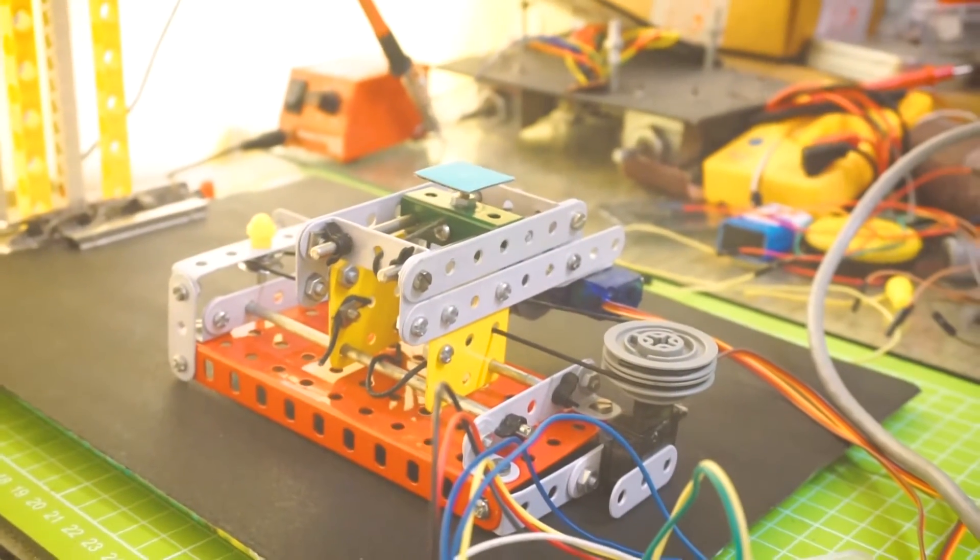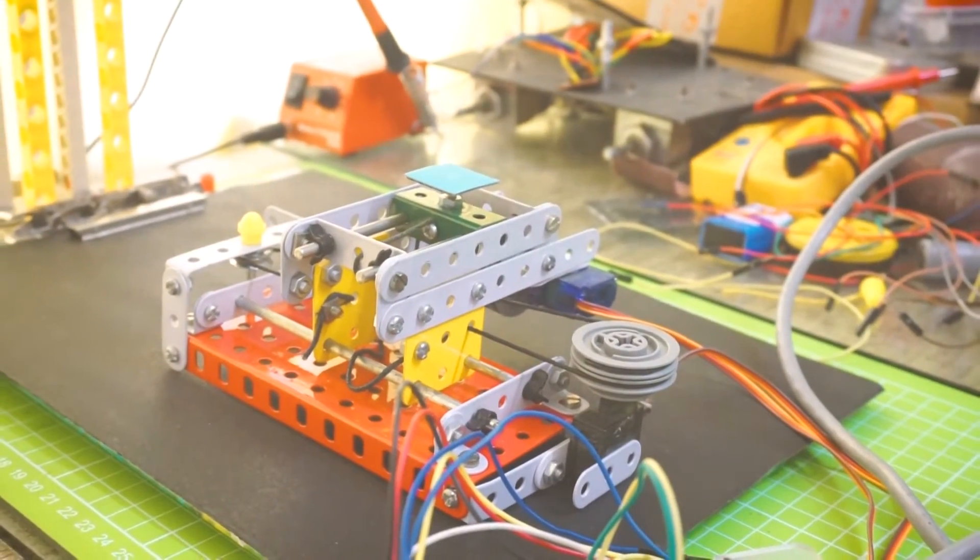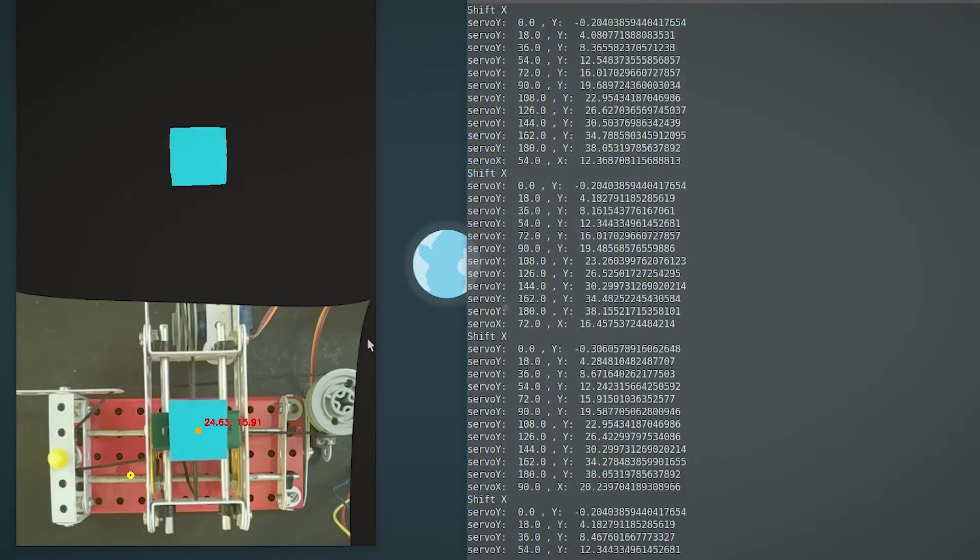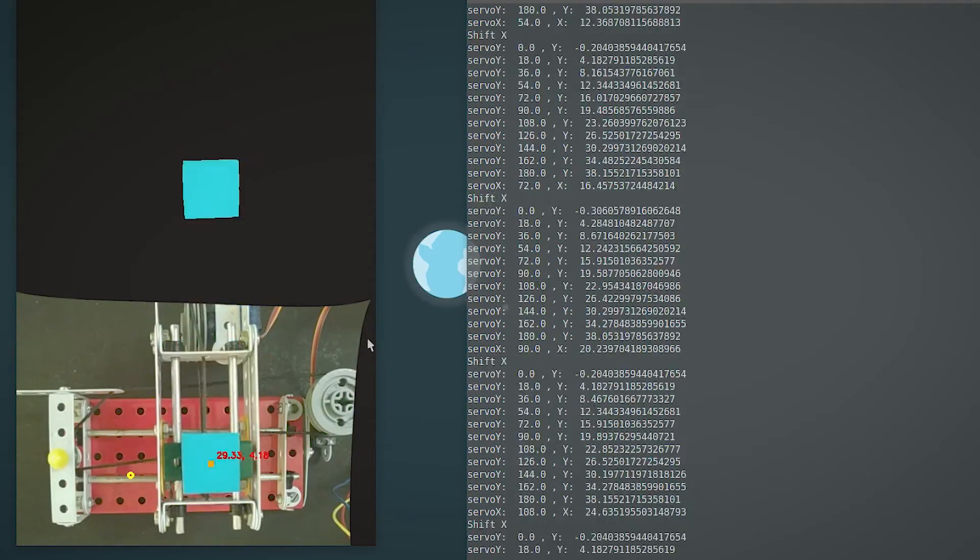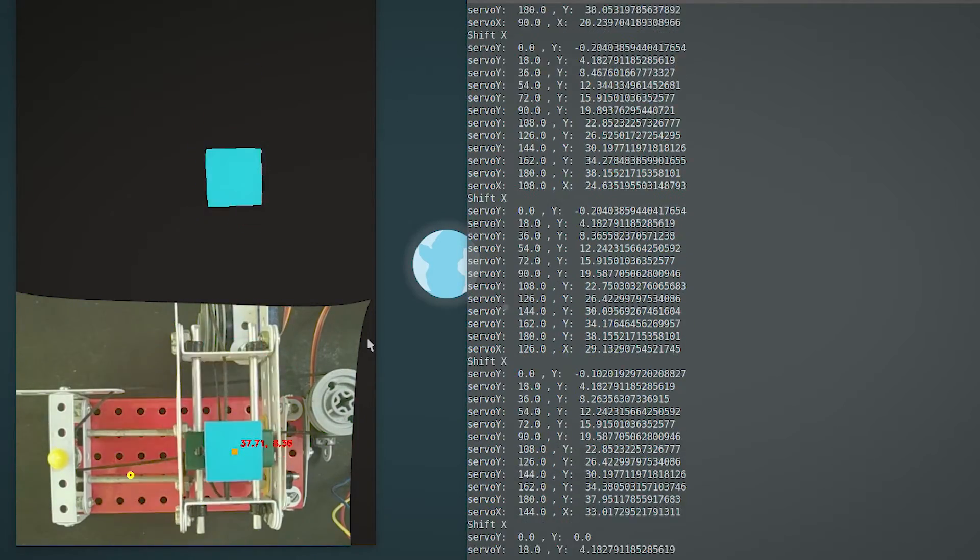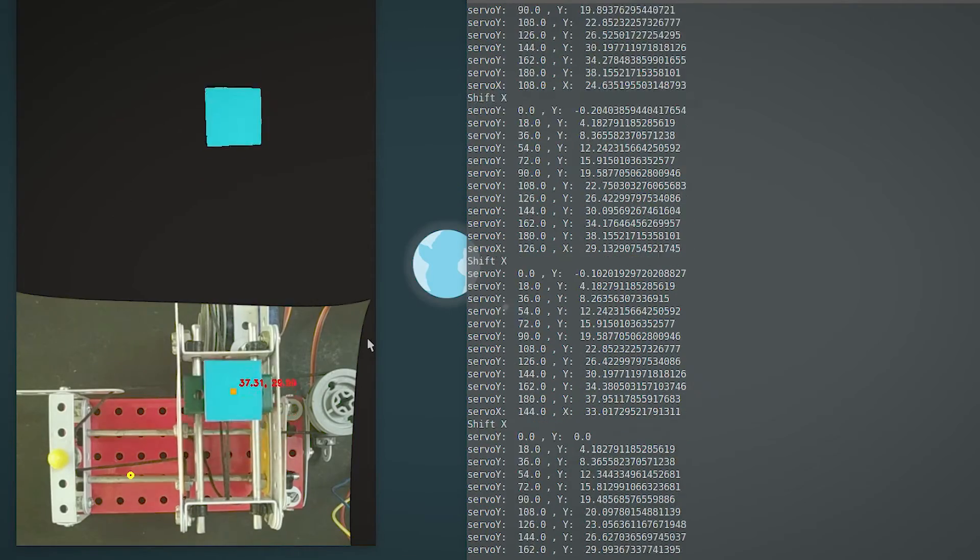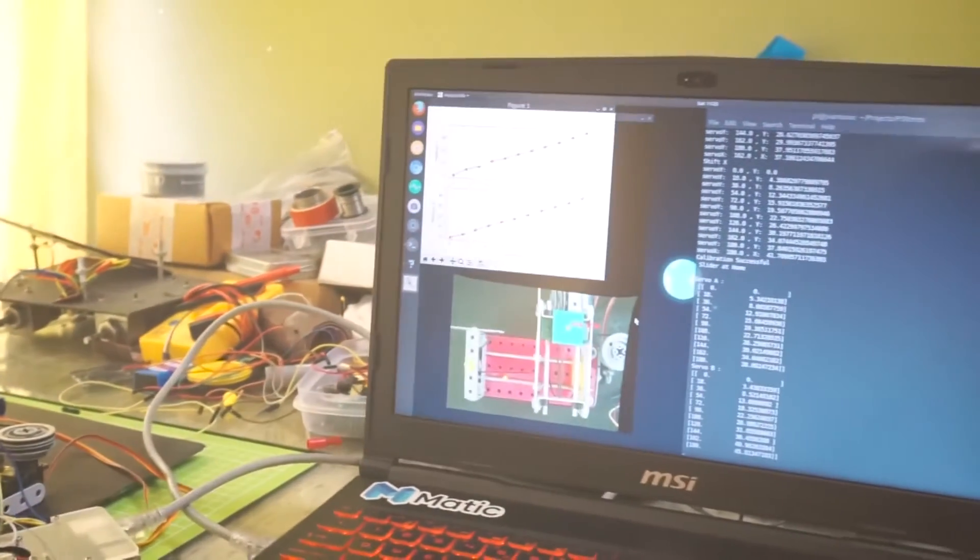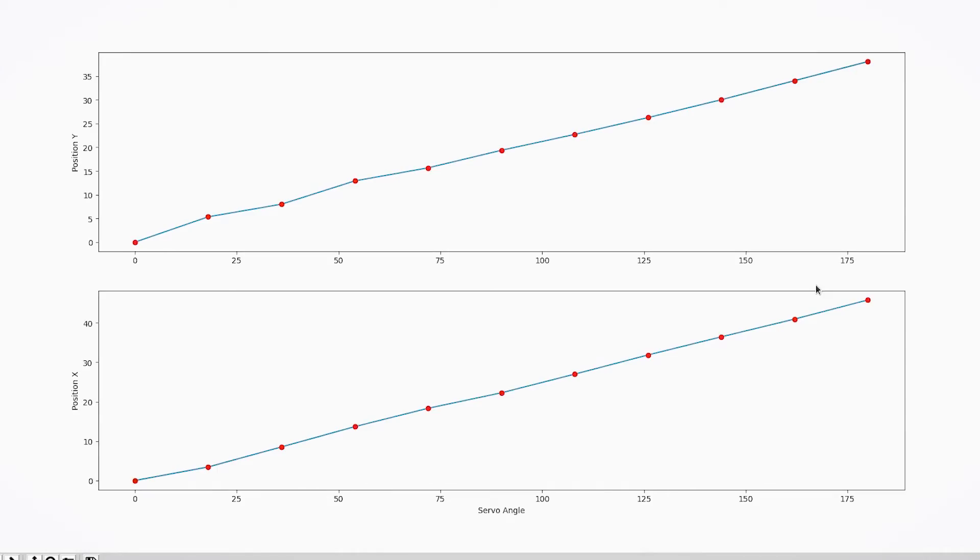Here I'm running a 10-step calibration which should be good enough for the purpose. Here's a plot of the slider displacement versus the servo angle input. You can see that the graph isn't linear due to the various non-rigid components in the system.